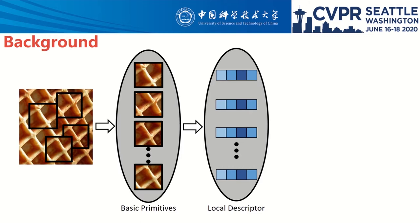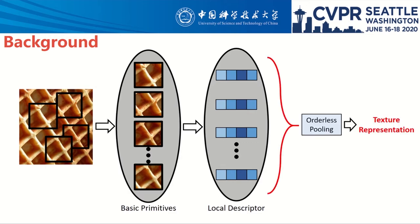Recently, methods building upon convolutional neural networks have inherited this property and utilize an orderless aggregation of local textural features to achieve state-of-the-art performance on texture recognition. Although existing texture recognition methods excel at providing invariance to spatial arrangement, they are typically limited in capturing the inherent structure of textural patterns, resulting in incomplete description and inaccurate recognition.